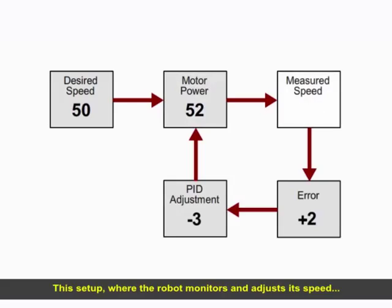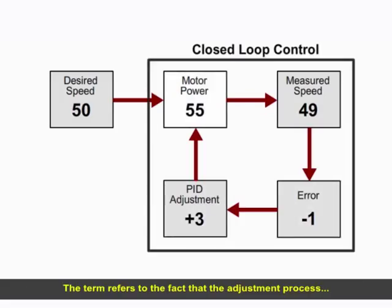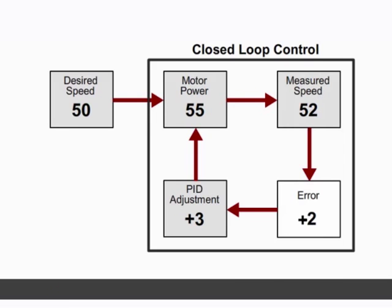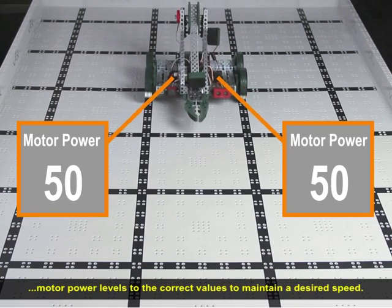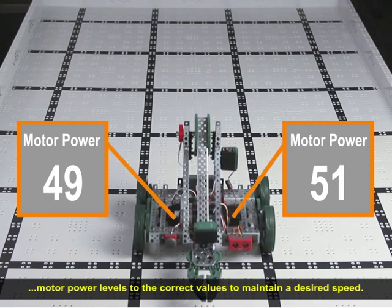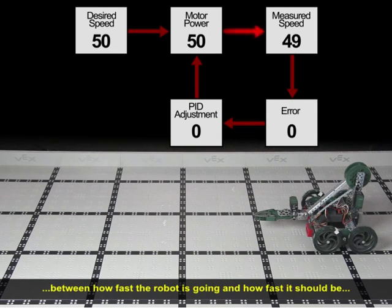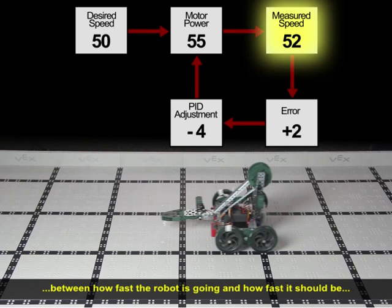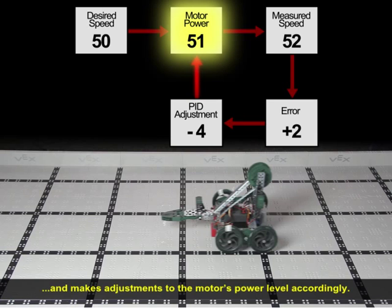This setup, where the robot monitors and adjusts its speed based on measurements it takes itself, is called closed-loop control. The term refers to the fact that the adjustment process is self-contained, or closed — no outside input is required. PID gives your robot the ability to intelligently self-adjust its motor power levels to the correct values to maintain a desired speed. The closed-loop system monitors the error difference between how fast the robot is going and how fast it should be, and makes adjustments to the motor's power level accordingly.